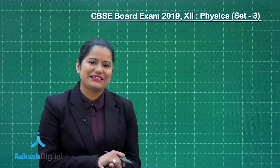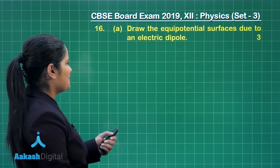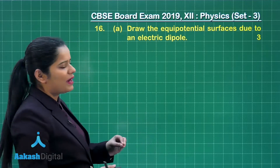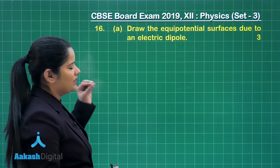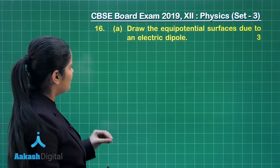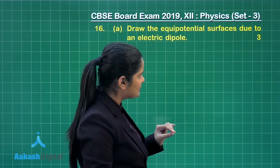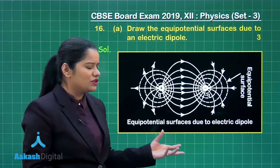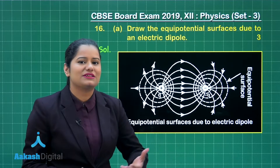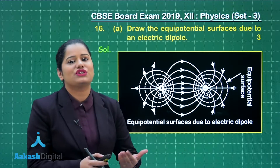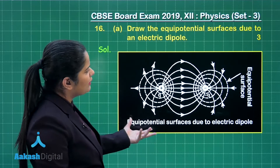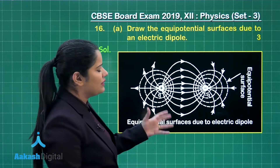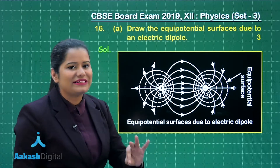Let's move on to the discussion for question number 16, which holds three marks and has two parts. The first part wants us to draw the equipotential surfaces due to an electric dipole. An equipotential surface is the surface over which the potential is the same at every point. The equipotential surface in the case of an electric dipole is drawn in this manner.